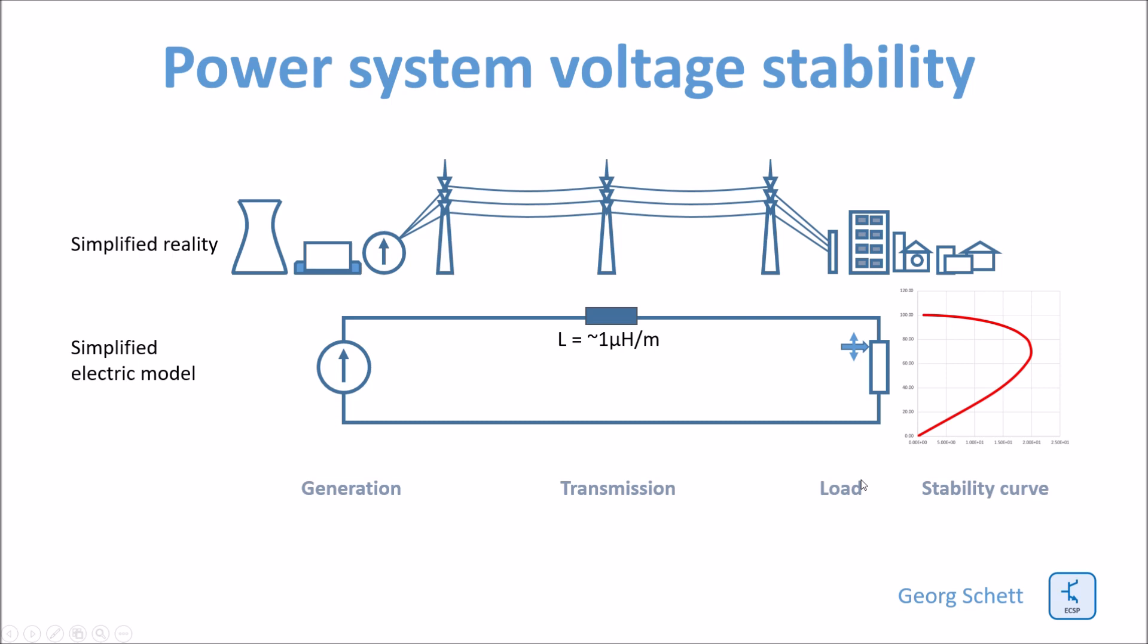When you start to increase the power demand of the load by reducing the resistance of the load, more current will flow from the source to the load. Because of the voltage drop in this reactance here, you also will get a voltage drop at the load. And this is what is addressed with the topic voltage stability.